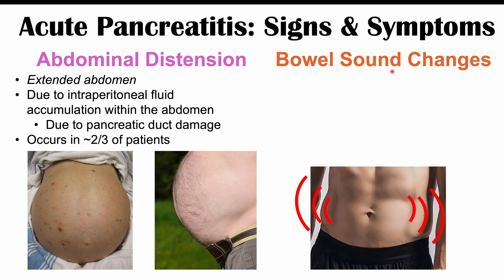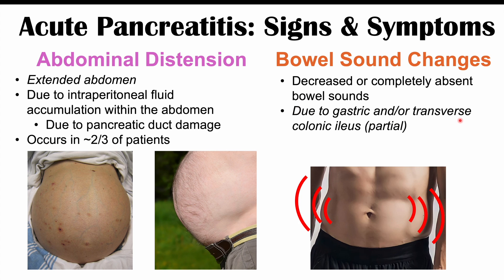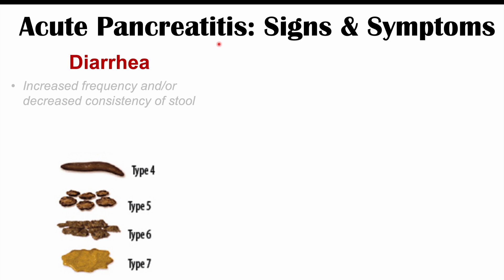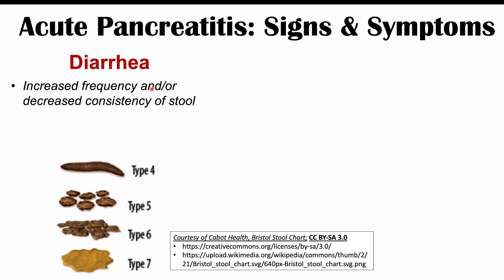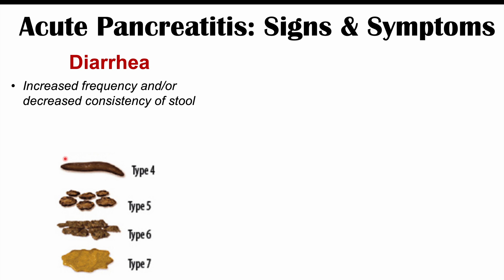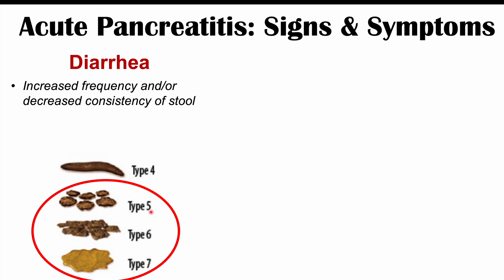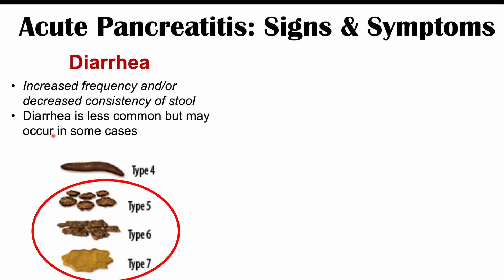Bowel sound changes can occur in acute pancreatitis, often presenting as decreased or completely absent bowel sounds due to gastric and/or transverse colonic ileus. Ileus means parts of the bowel stop contracting properly, slowing or stopping peristalsis and leading to reduced bowel sounds. Diarrhea — increased frequency or decreased consistency of stool — is less common but may occur in some cases.